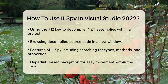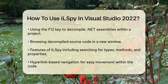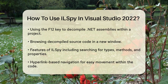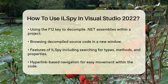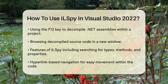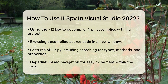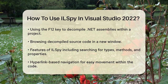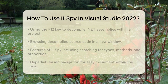Now let's talk about how to use ILSpy within Visual Studio. With the extension enabled, you can navigate to any .NET assembly in your project and use the F12 key to decompile it. This will open the decompiled source code in a new window, allowing you to browse through the code as if it were your own.